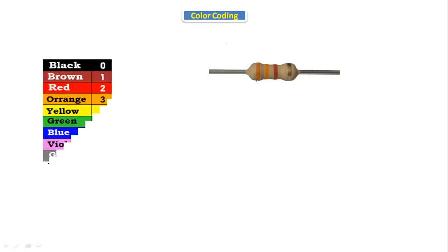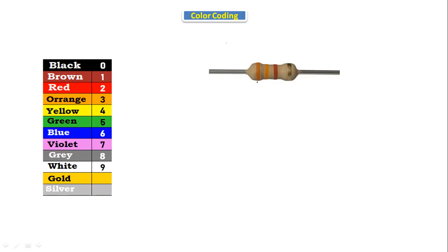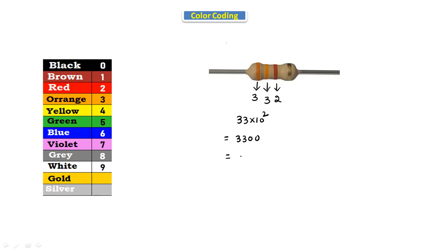Let's look at another resistor with orange, orange, red color bands. Orange indicates 3, so the first two bands give 33. Red is the multiplier, indicating 10^2. Applying the formula: 33 × 10^2 = 3300 ohms, which is 3.3 kilo ohms. Any resistor having orange, orange, red has a value of 3.3 kilo ohms.